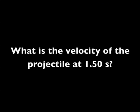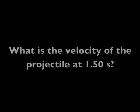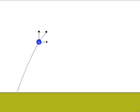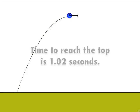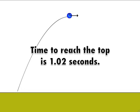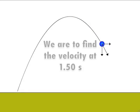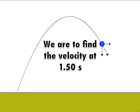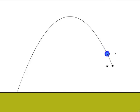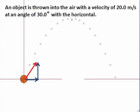Our final question is: what is the velocity of the projectile at 1.5 seconds? Well, at the very top of the flight, it was 1.02 seconds to get there. Therefore, 1.5 seconds would be about here, and we're to find the velocity at that point. So, let's analyze this.